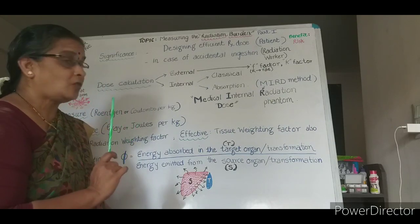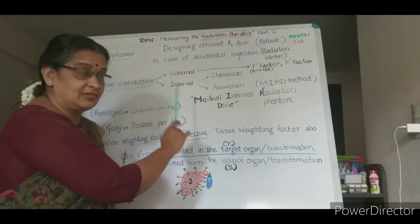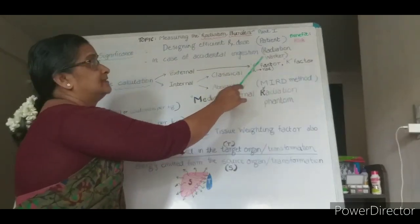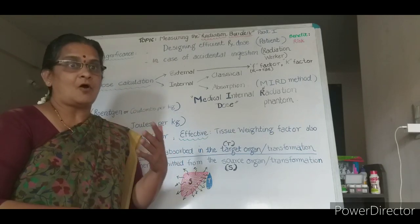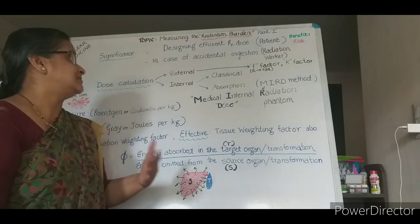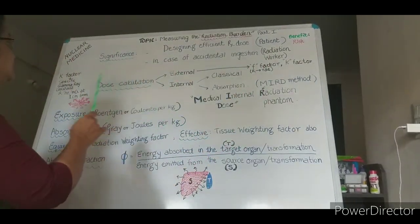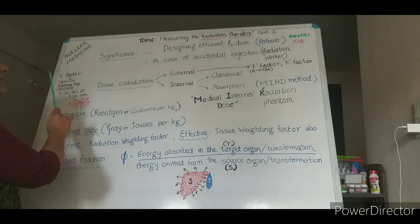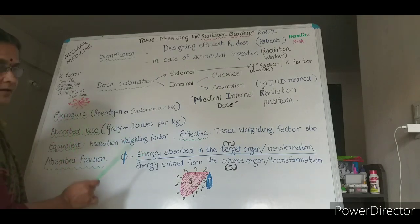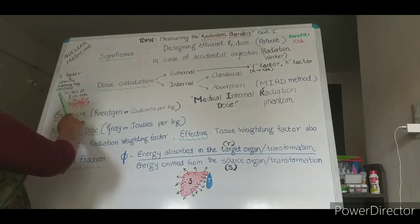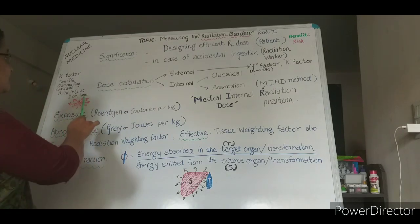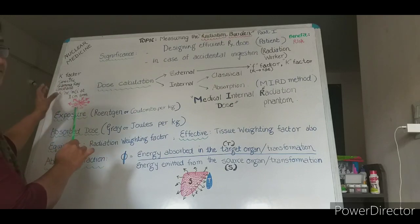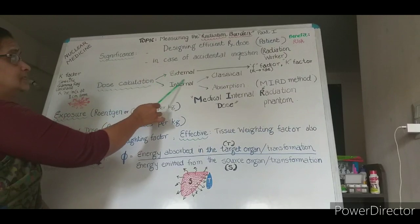Now in external exposure, what is required to calculate is the F factor and K factor. F factor depends on the radiations and the tissue equivalent, the organ of interest which is going to face this external exposure. As for the K factor, it is the specific gamma ray constant. It is the roentgen, that is unit of exposure. For the internal dose calculations, it is per unit time per unit activity at one centimeter distance, where time is measured in hour and activity is measured in millicurie. This is the specific gamma ray constant which is very important to get the external dose calculations.